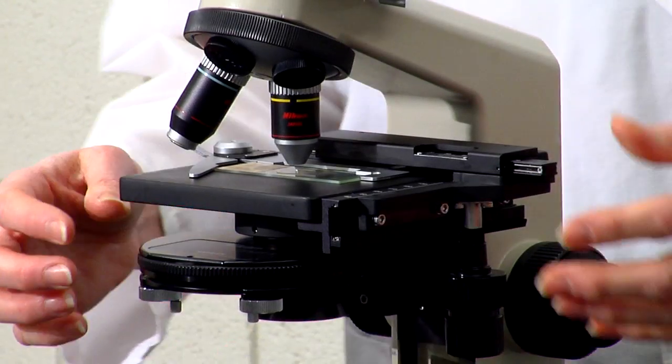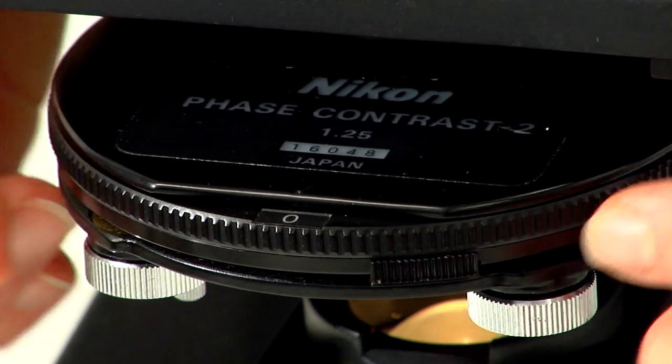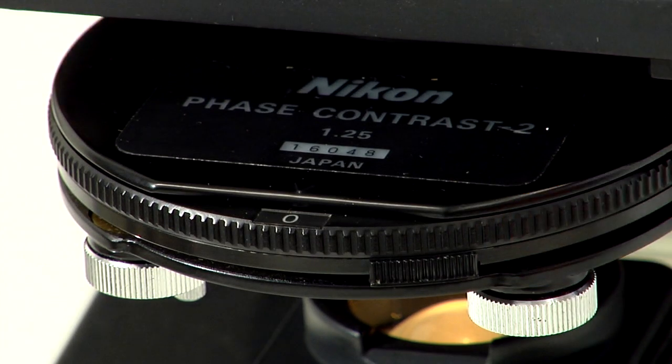You will need to set the rotating disc in the condenser lens system to the zero position. You will also need to adjust the iris diaphragm on the rotating disc. This adjusts the amount of light that is allowed through the lens.